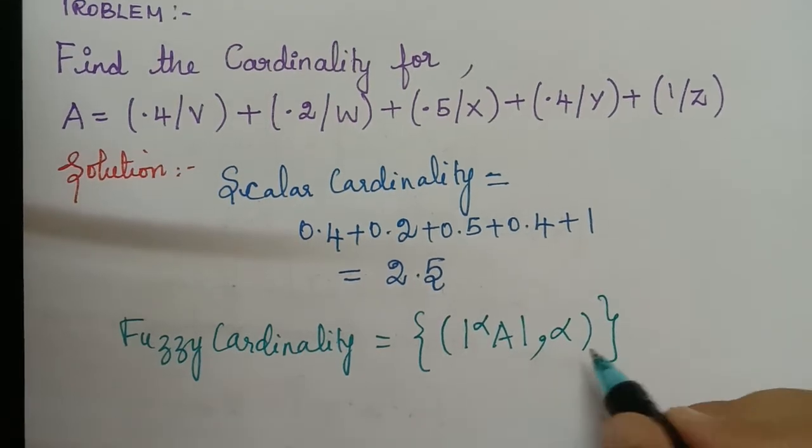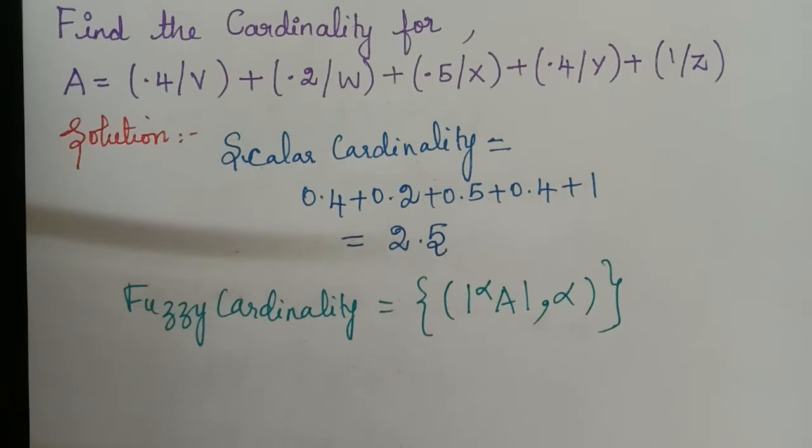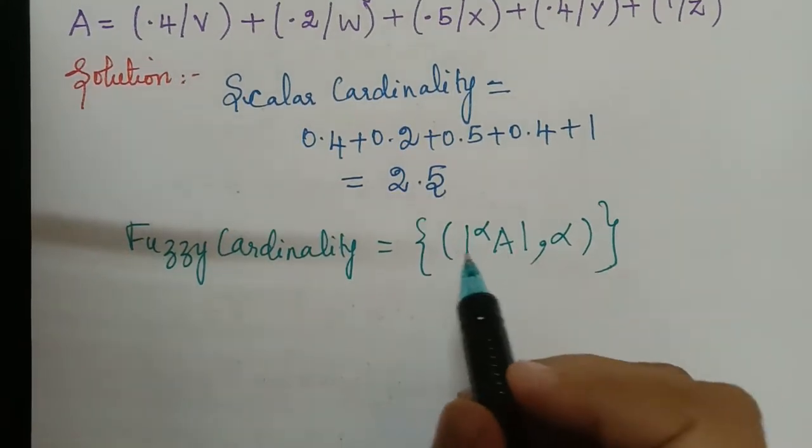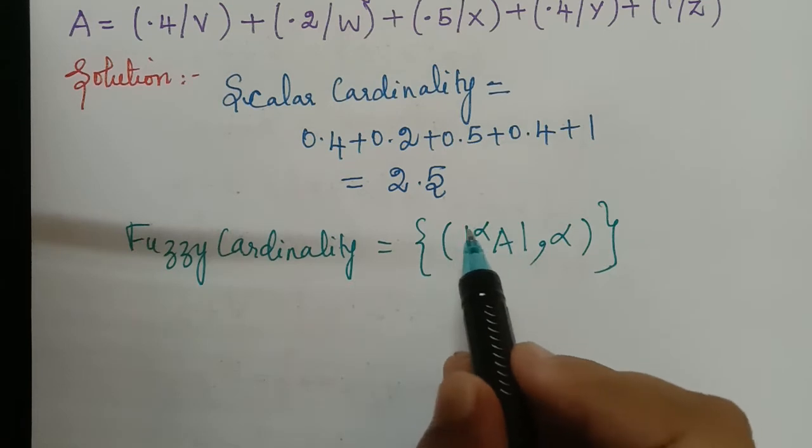So this also we have seen in that video. So now we have to first list out all the alpha cut sets and we have to find its cardinality.